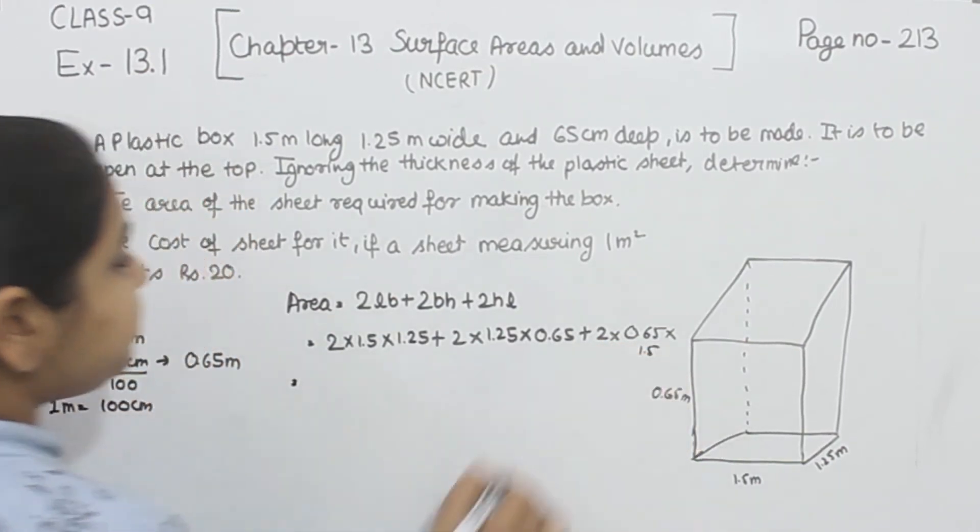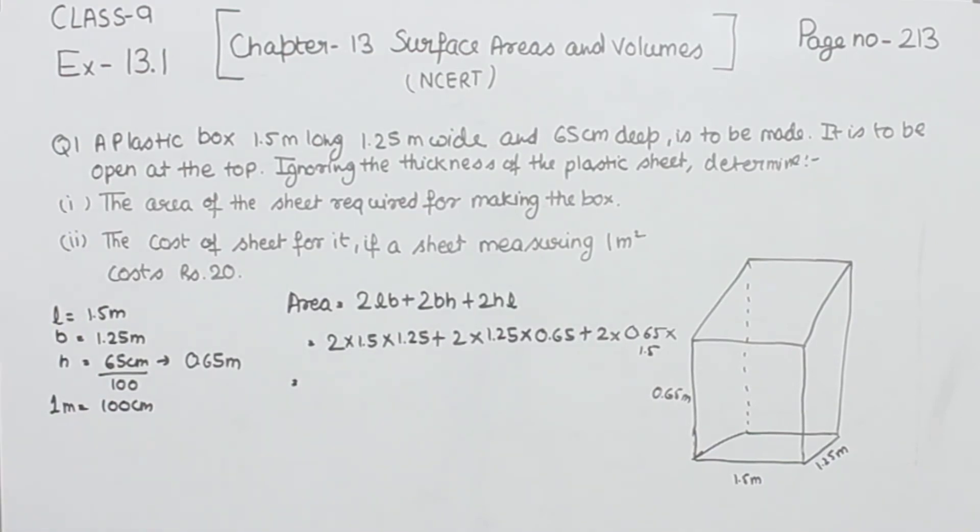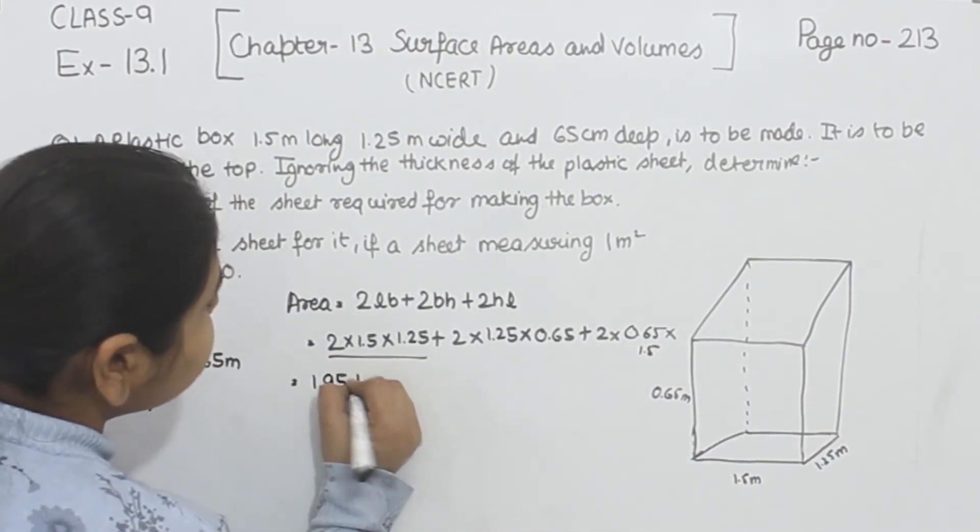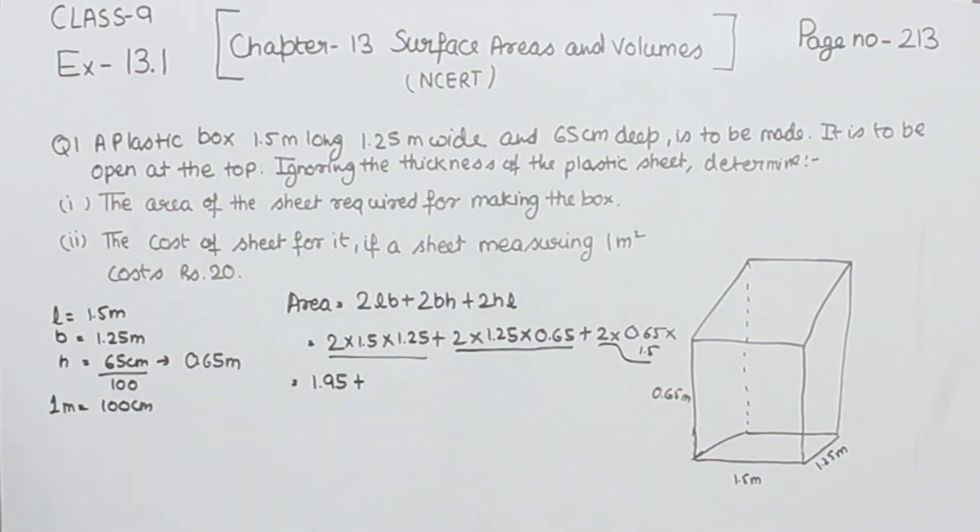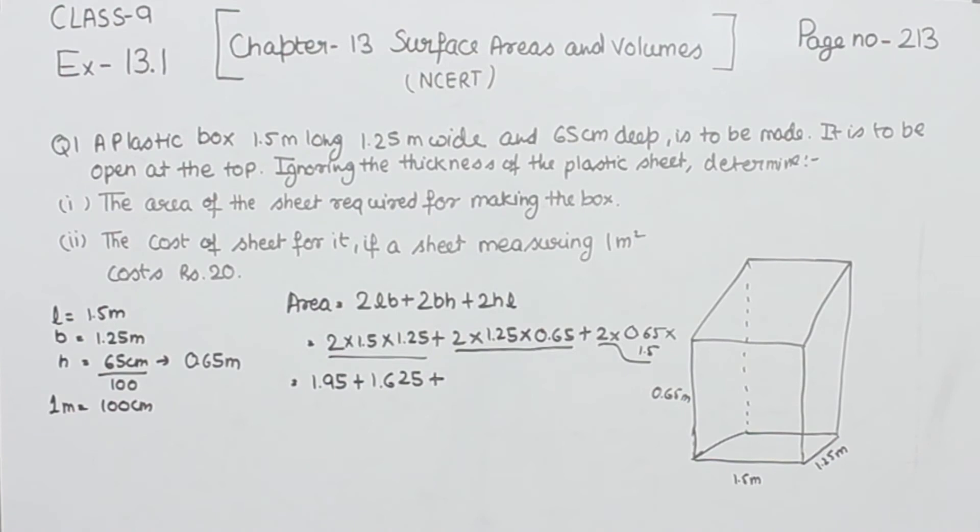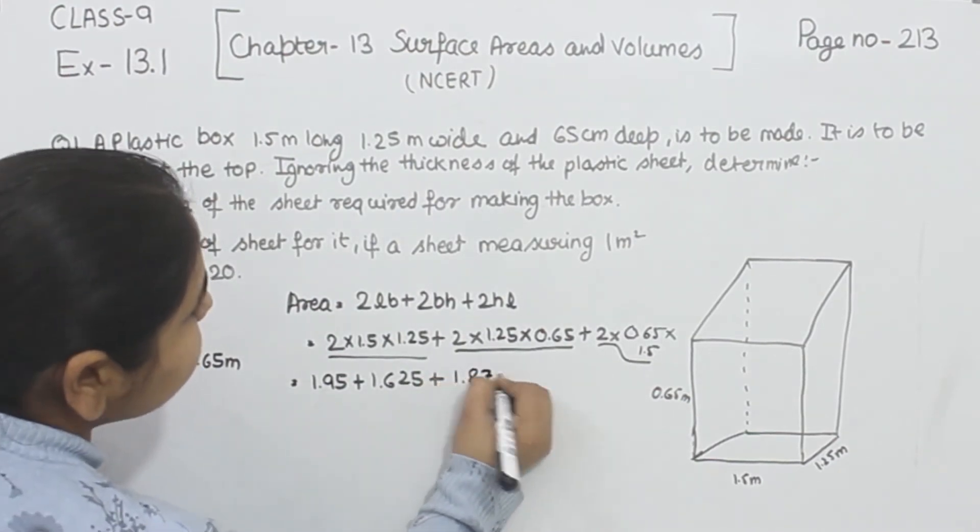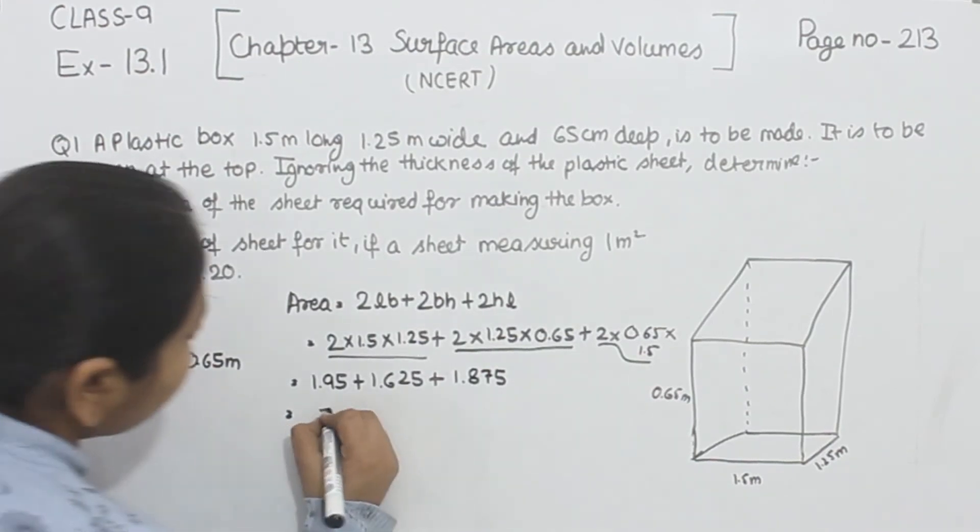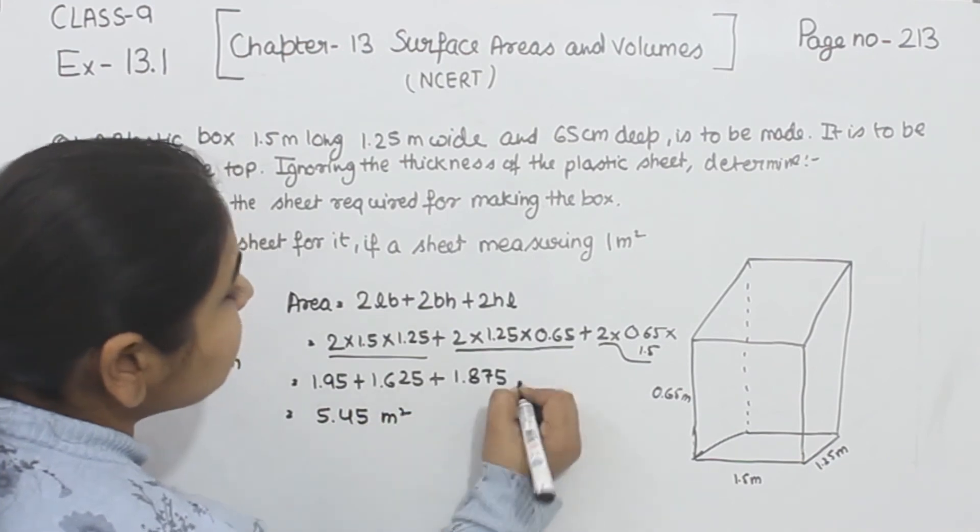This is the area we need to find out, so now we will multiply these values. If we multiply each term, we get the value as 1.95 plus 1.625 plus 1.875, which equals 5.45 square meters.